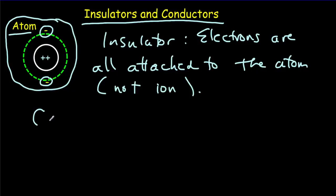Whereas in a conductor, some of these valence shell electrons will be loose. They won't be attached to any particular atom, and that means they're going to be free to flow around.